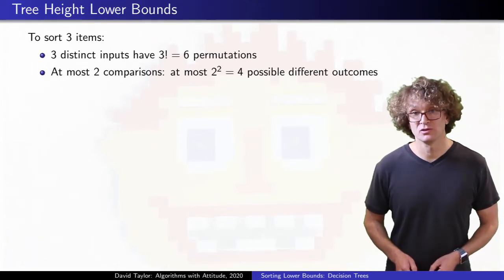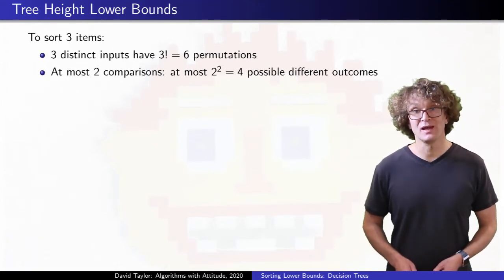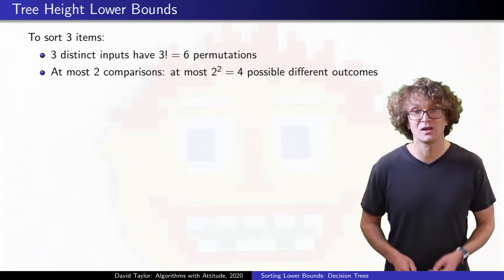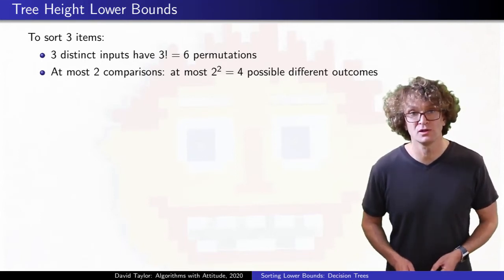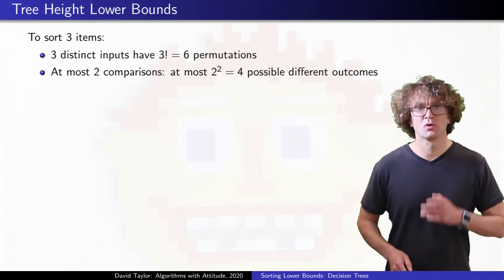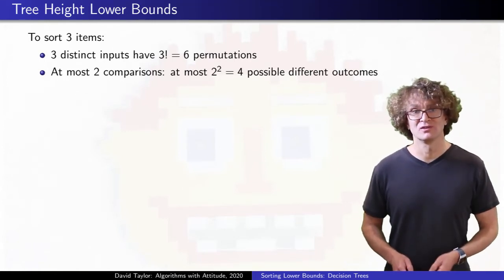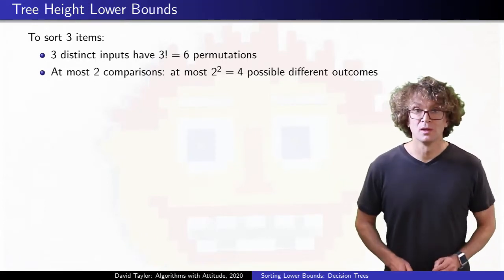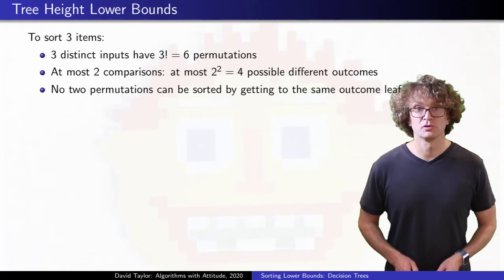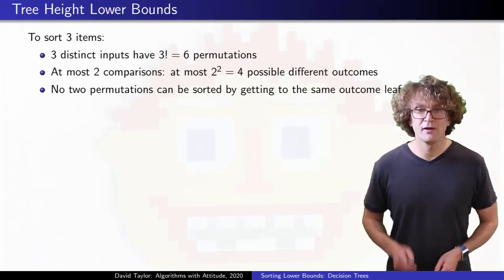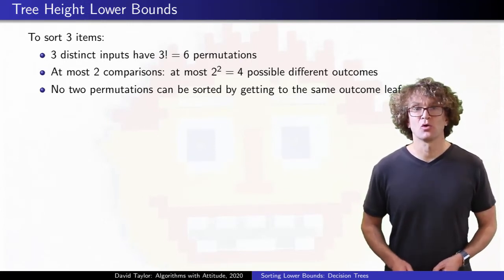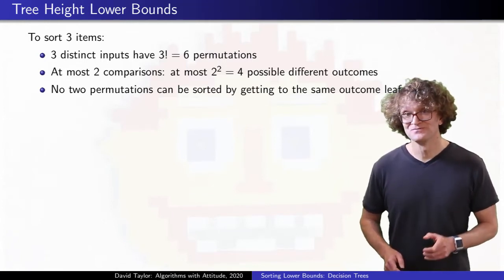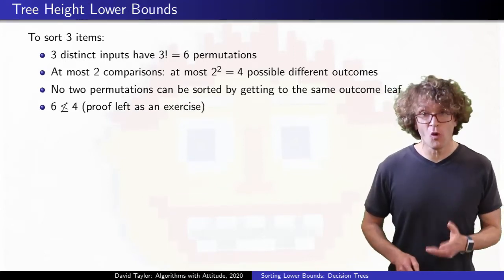To get six permutations into four leaves, at least two permutations must go to one leaf, and the algorithm will do the exact same thing for both of those permutations. If you reorder two different permutations in the same way, like, keep the first element first, but swap the other two, at most one of those two permutations can be sorted afterwards. So every permutation needs to get its own leaf. It boils down to the problem that six is not less than or equal to four.